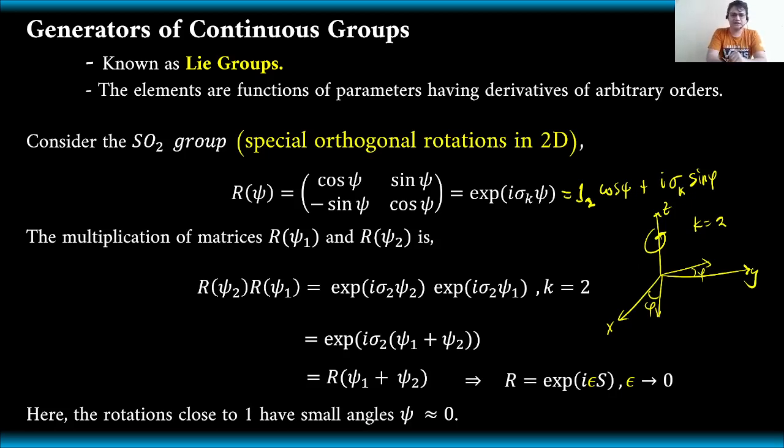Therefore, if we consider two rotation matrices such as R as a function of psi one and R as a function of psi two and multiply these two, we actually just have to add the exponents. R as a function of psi two is equal to e to the i times sigma sub two psi two, and R as a function of psi one is equal to e to the i times sigma sub two psi one. Here we have k is equal to two because we are dealing with two dimensions. Since i times sigma sub two is common, we just have to factor this out and add the two angles, psi one and psi two.